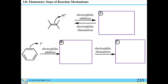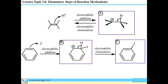For electrophilic addition — such as the first step of hydrohalogenation or hydration of an alkene — we need an electrophile and a pi bond. When the electrophile adds to the pi bond, you are left with a cationic site on one of the carbons. Electrophilic elimination occurs when your electrophile is eliminated, leaving electrons behind to become the pi bond. We will later see electrophilic aromatic substitution, which is a combination of electrophilic addition and electrophilic elimination, where the net result is replacement of an H with an I.